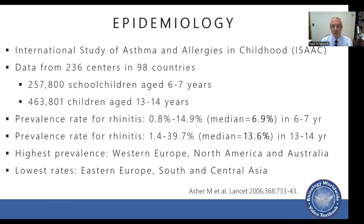In older kids 13 to 14, the prevalence varied between 1.4 to 39.7 percent, with a median of 13.6 percent. The highest prevalence was in Western Europe, North America, and Australia, and the lowest rates were in Eastern Europe, South, and Central Asia.